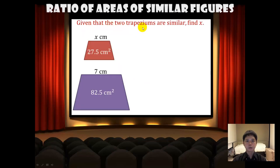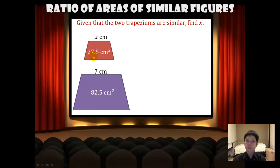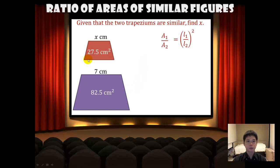Given that the two trapezoids are similar, find x. Since they are similar, we can use the formula for the ratio of areas of similar figures, which is A1 over A2 equals the square of L1 over L2. Let's substitute the values into the equation.